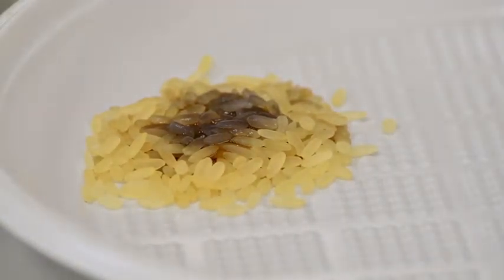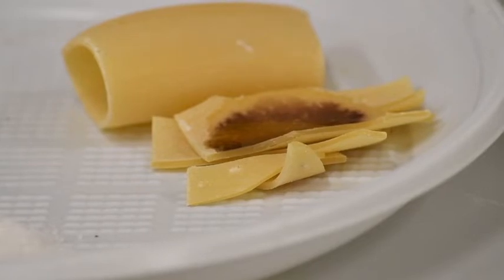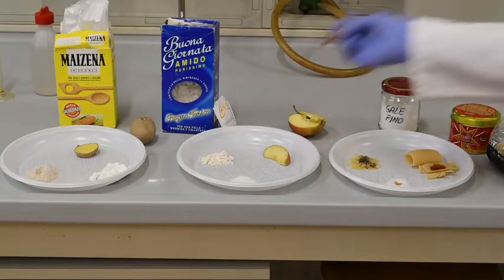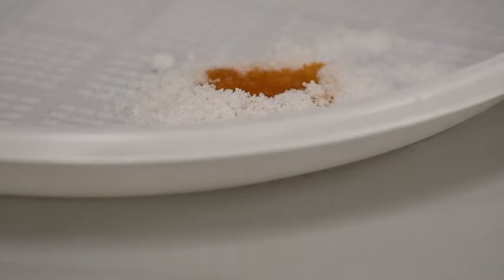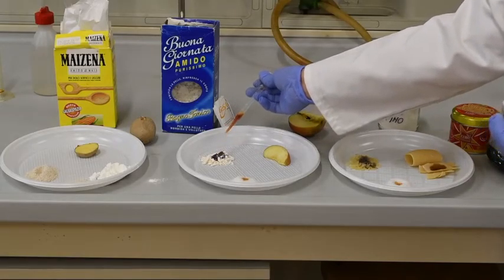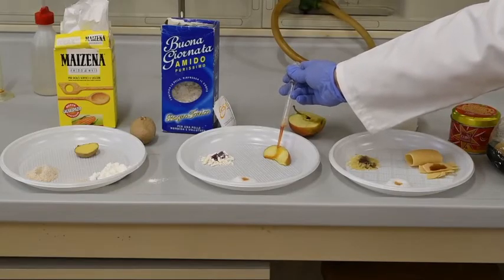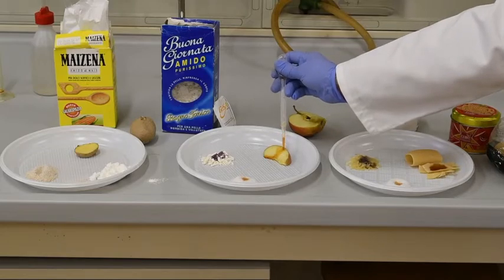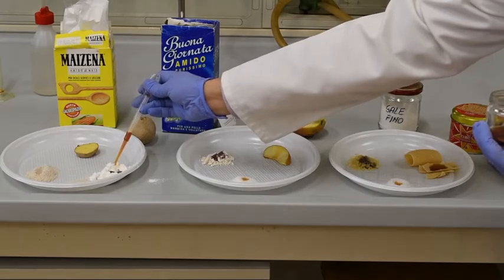Vedete il riso ha sviluppato una colorazione nera. Ora controlliamo la pasta. Si intravede qualcosa, ancora non benissimo. Il sale, lo zucchero evidentemente non contengono amido, sono rimasti tal quali. L'amido in purezza ovviamente sviluppa molto velocemente una colorazione intensa perché è sostanzialmente amido puro. Sulla mela non si vede nessun effetto.